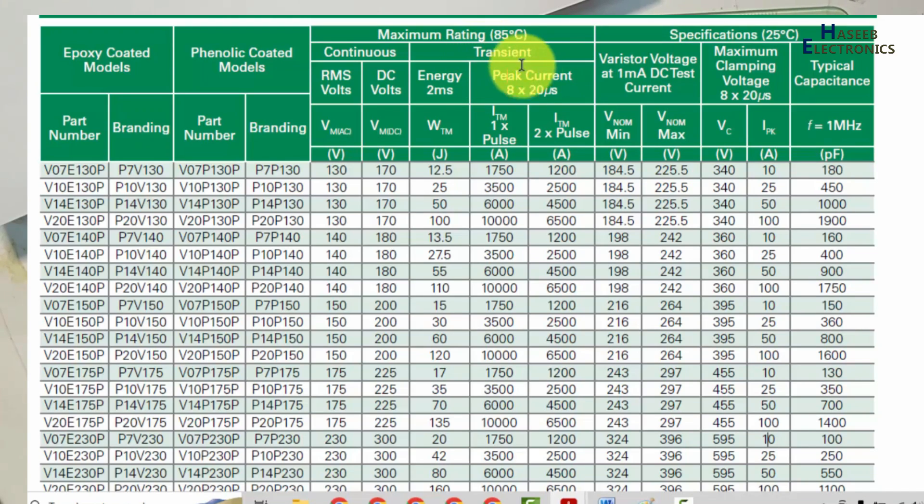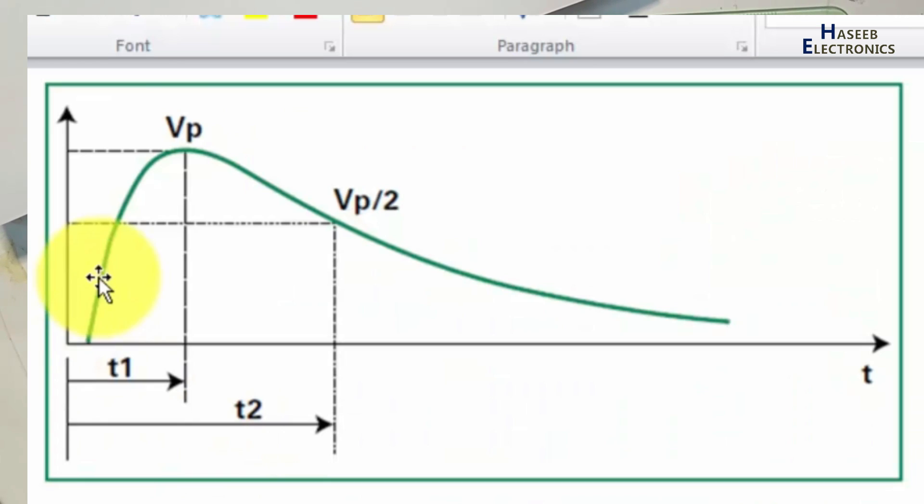Here is now transient condition. If any transient, any pulse will arrive - 8 by 20 microseconds. That means if any pulse starts from t0 and reaches up to 90 percent of its peak - from t0, from zero line to 90 percent of the peak, it is called t1. If any pulse will reach at 90 percent in 8 microseconds, so this is first time.